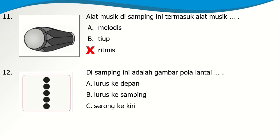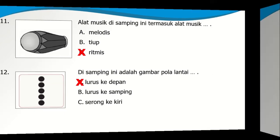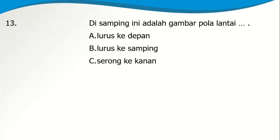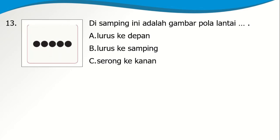Nomor 12: Di samping adalah gambar pola lantai A. Lurus ke depan, B. Lurus ke samping, atau C. Serong ke kiri. Dalam tarian ada pola lantai, yaitu posisi penari saat menarikan tarian. Posisi penari bisa berubah-ubah supaya tidak monoton. Pola lantai ini adalah lurus ke depan — ada 5 penari yang posisinya lurus ke depan. Nomor 13: Pola lantai di samping adalah lurus ke samping atau disebut juga horizontal.